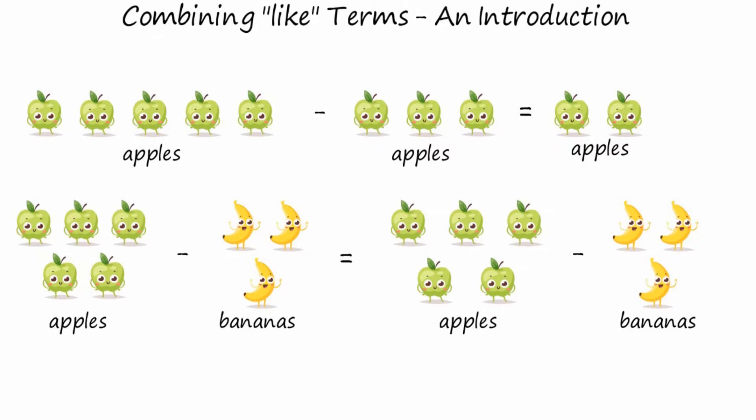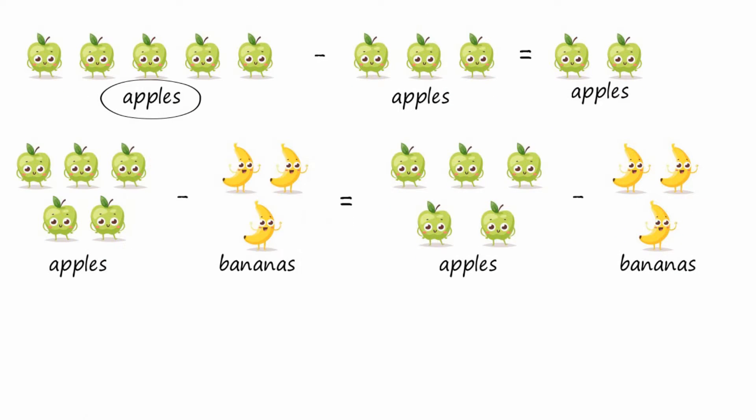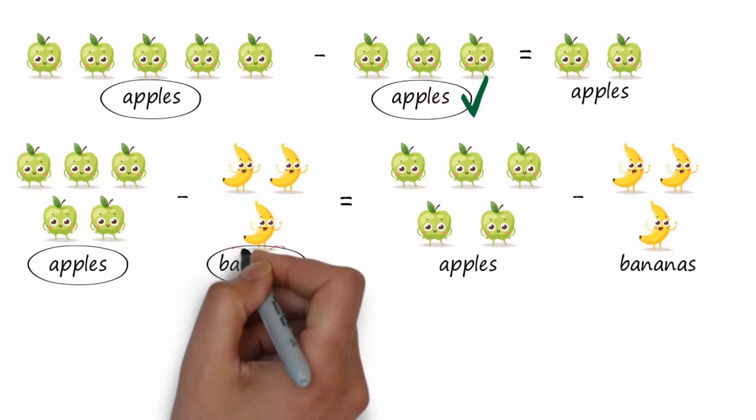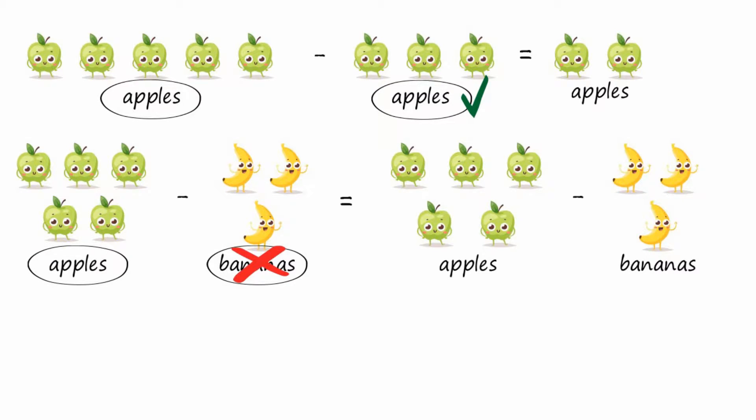The first time, we were subtracting apples from apples and they're the same, so we can do that. And the second time, we had apples and we had bananas and they're not the same, so we can't combine or subtract them.